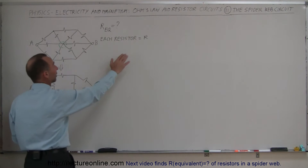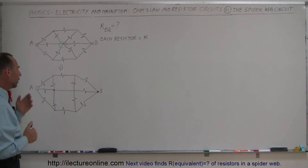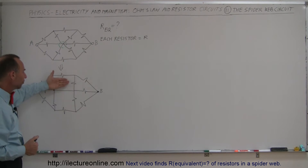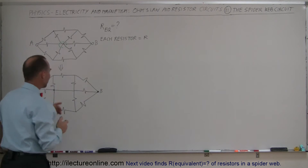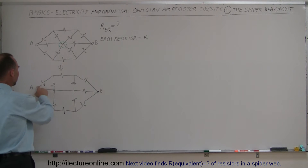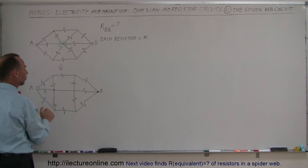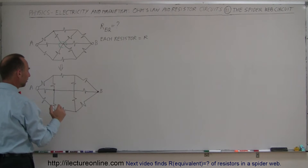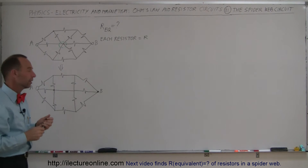Remember that each resistor has the value of R — whatever R stands for, 1 ohm, 10 ohms, it doesn't matter. What we could do to simplify this is fold this over and make it into a half-looking circuit. I'm going to take the entire bottom half and bring it up here. The reason I can do that is whatever resistor I have up here, I have a counterpart down there.